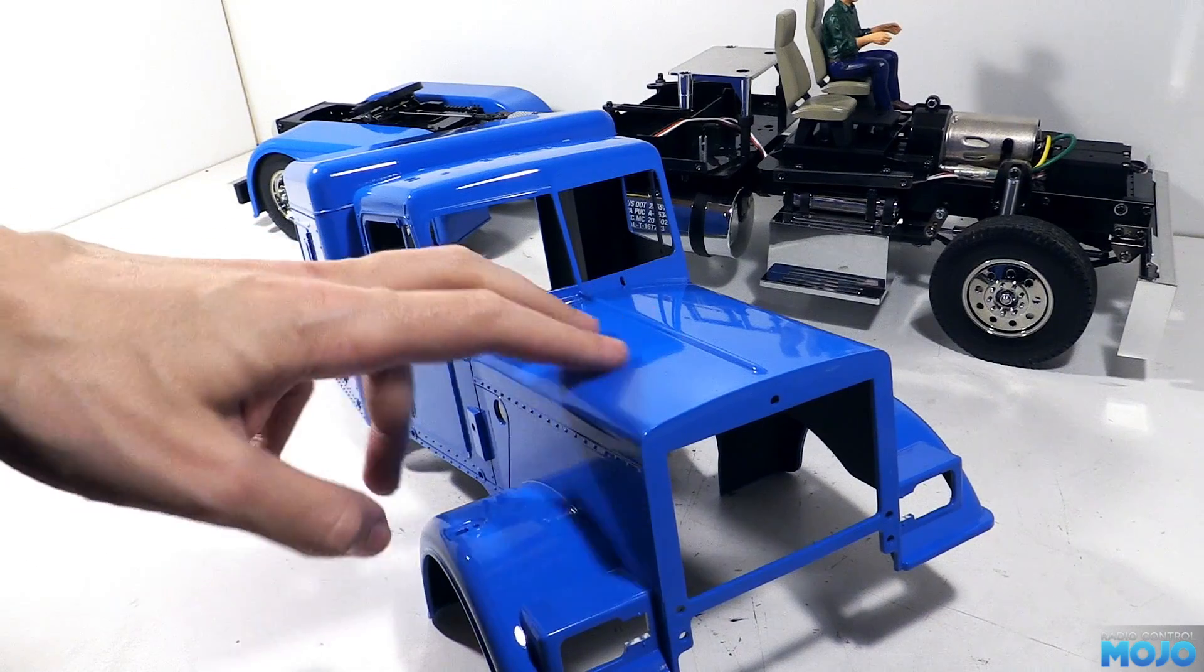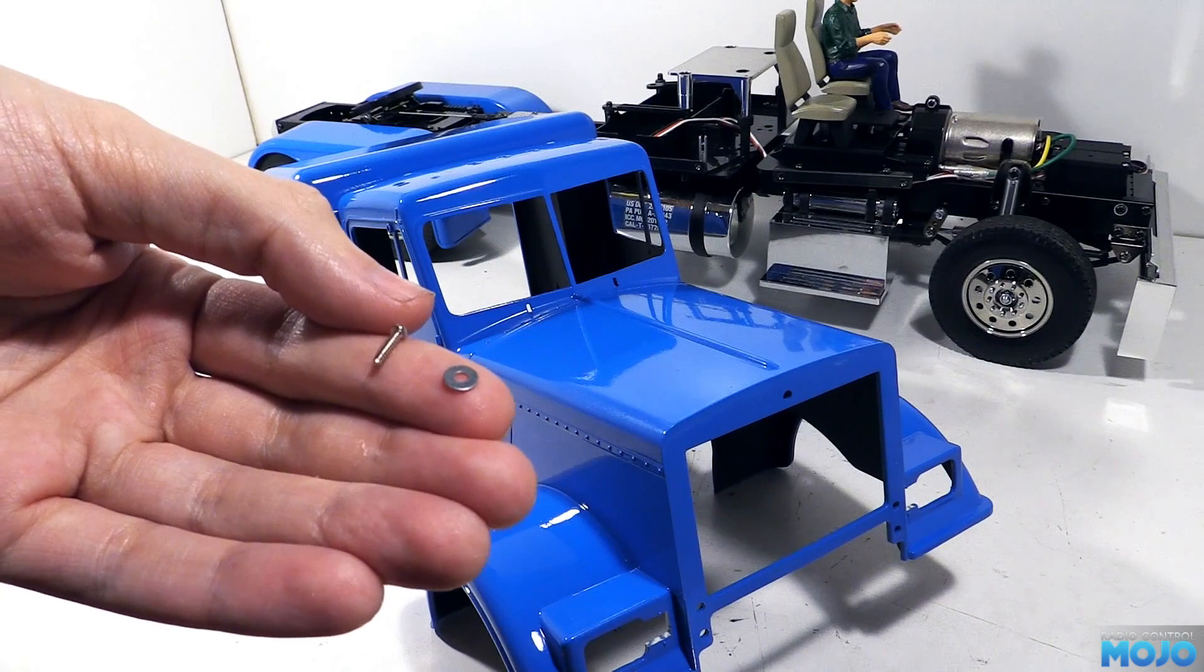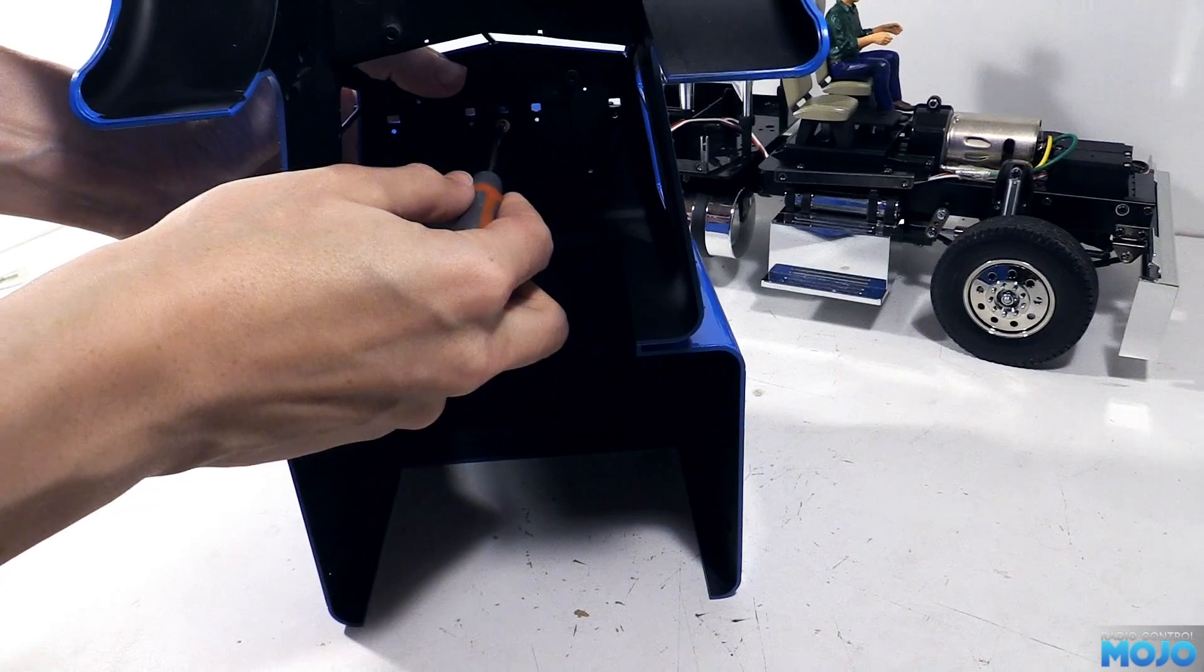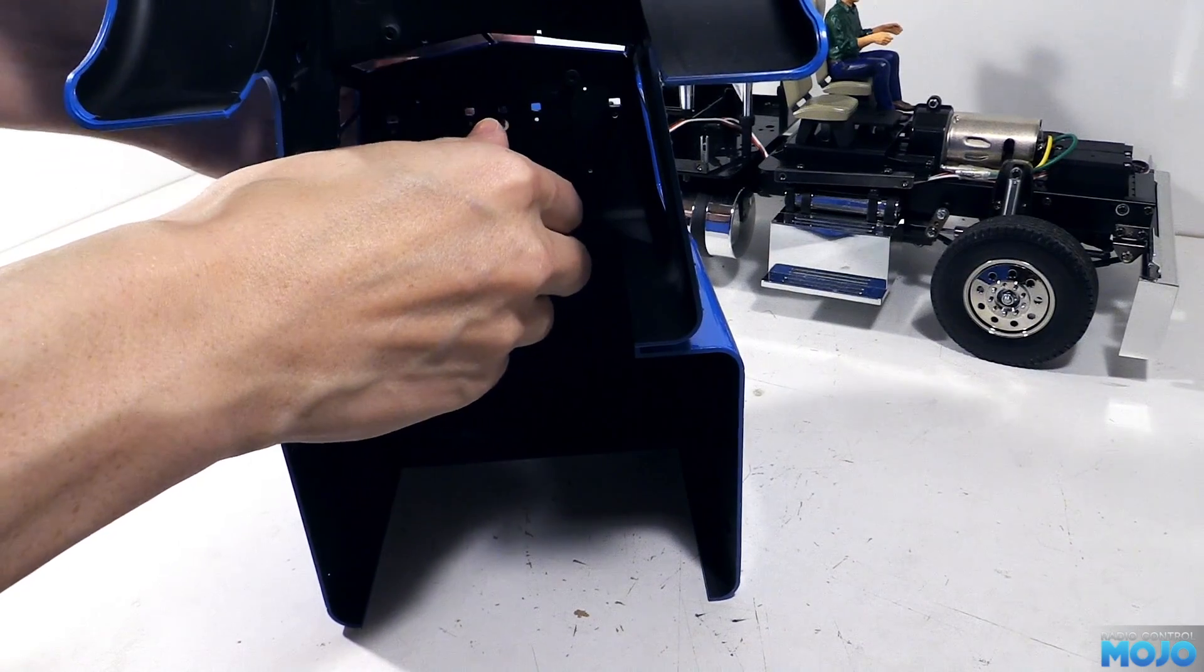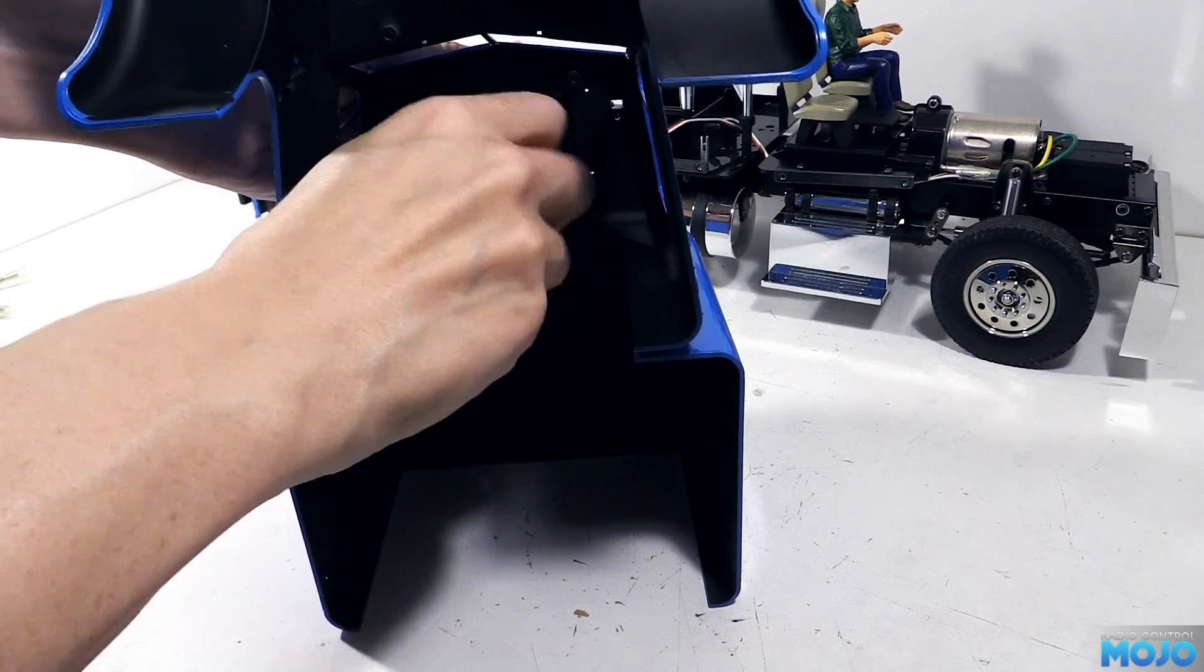Time to fit all the bits to the body. First we'll be the roof lights. They're held in with 2mm self tappers and washers. They're extremely fiddly to install. Keeping a grip on the lights while installing the screws without slipping is quite a challenge. Take your time and it does all come together.